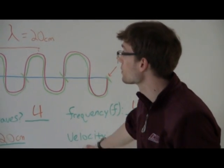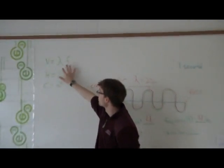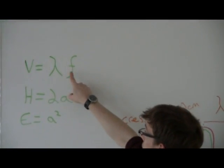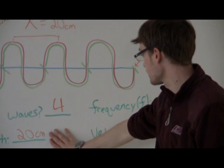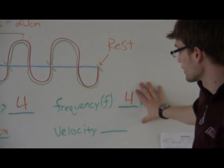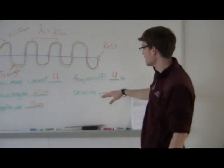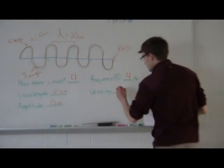We're going to go ahead and get into our first equation. That is velocity equals wavelength times frequency. So all you do is you take the wavelength, which is 20 centimeters, and multiply that by the frequency. So four times 20 is 80. So the velocity is going to be 80.